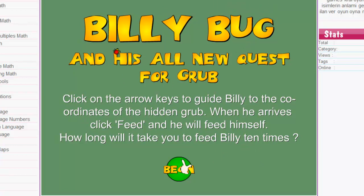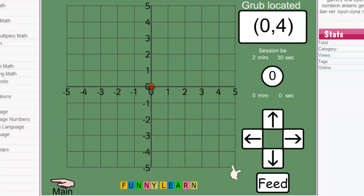Let's start. Use arrow keys to guide Billy to the coordinates of the hidden grub. When he arrives, click feed and he will feed himself. How long will it take you to feed Billy ten times? Okay, let's start.